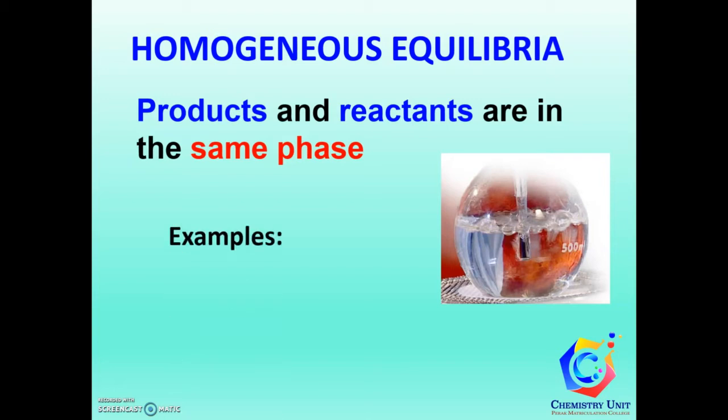For example, sulfur dioxide, oxygen, and sulfur trioxide are gases. They are in the same phase, so it is a homogeneous equilibrium.